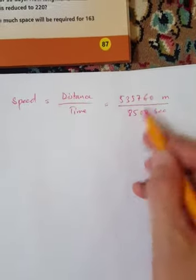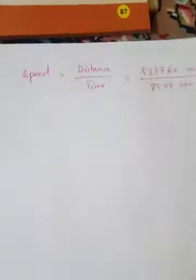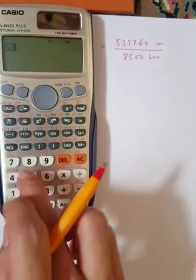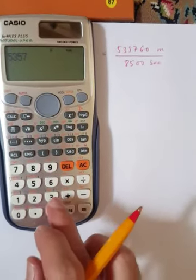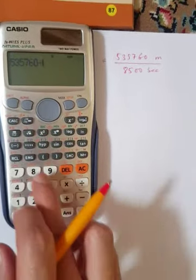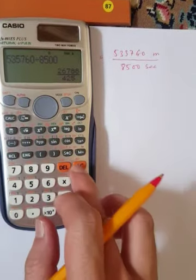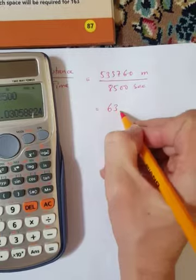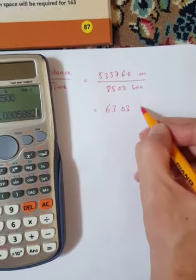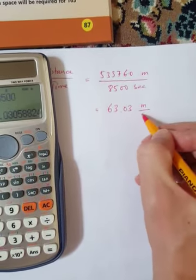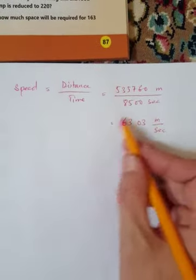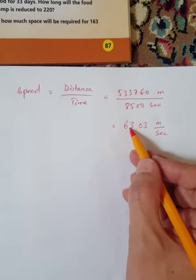So we write: 53,760 divided by 8,500. This gives us 63.03.